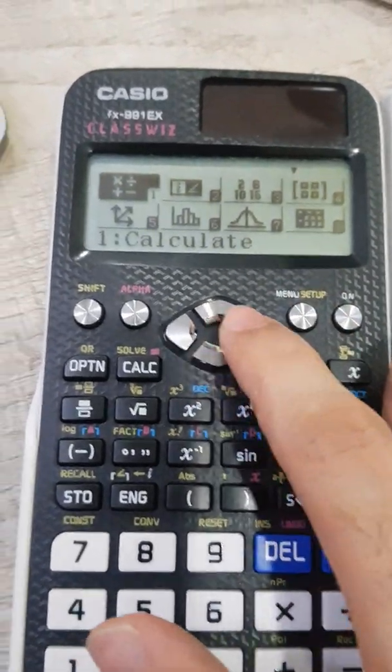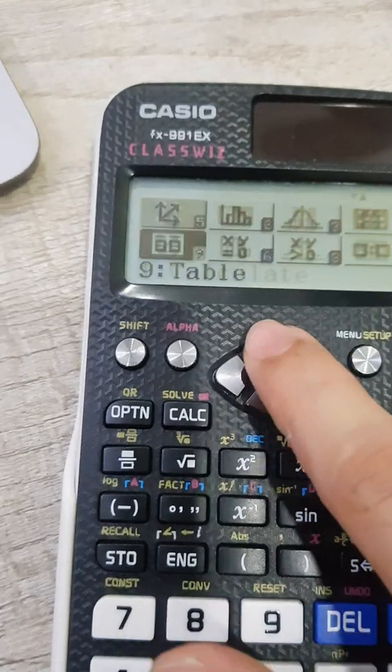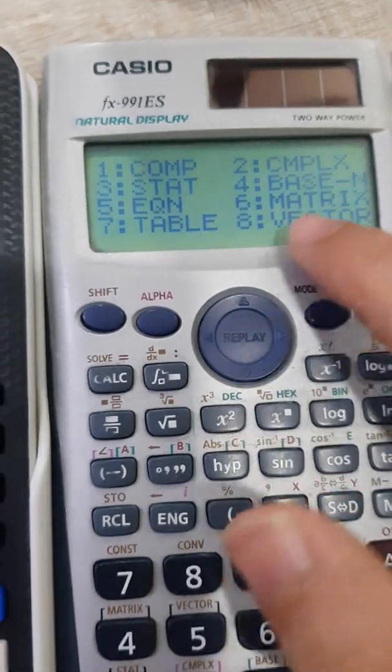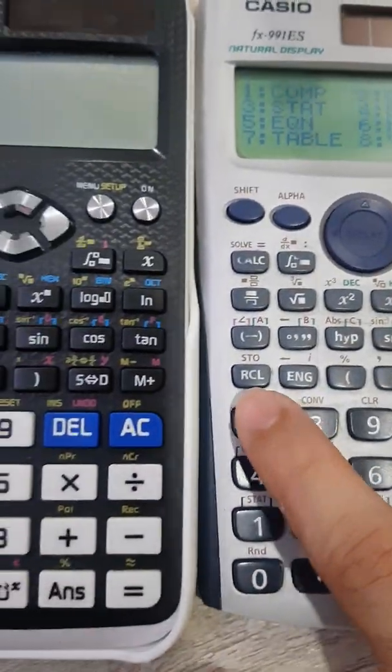So here's what you do, you press the menu key and then you navigate to where you see table. So in this, you'll see at 9 and in this, you press the mode and then you see table at 7, so you'll press 7 here.